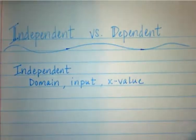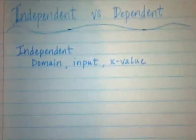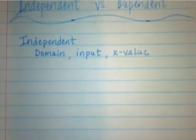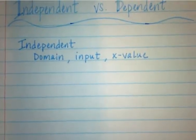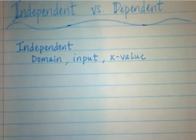And we always start with the x-value. So if you think about ordered pairs, the x-value always comes first. That's because the independent one comes first.